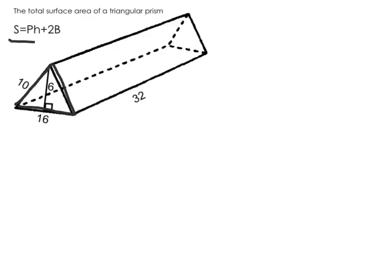So I have my formula up here. Surface area is the perimeter of the base times the height plus 2 times the area of the base. It's written capital P times H plus 2 times capital B.